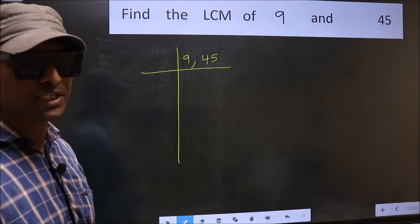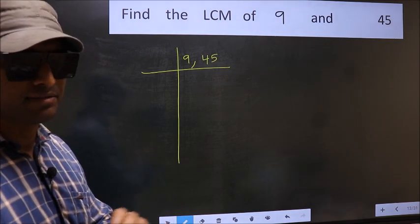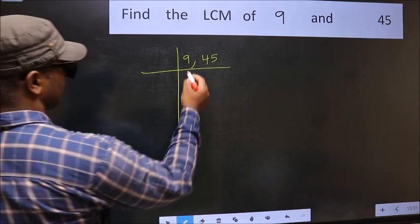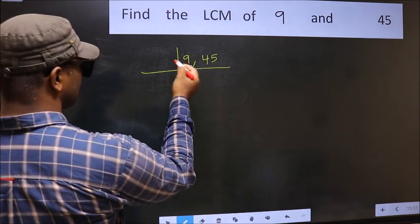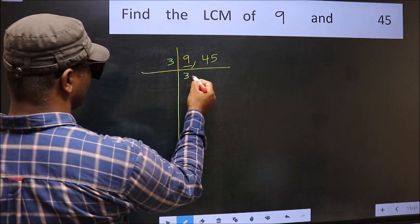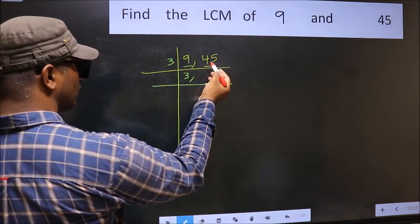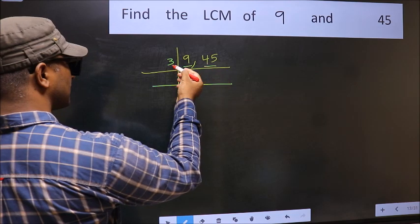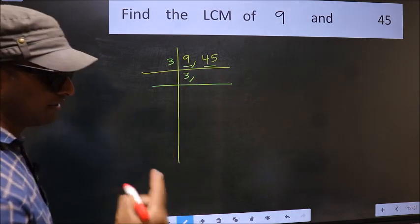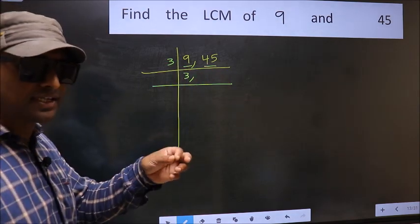Now focus on the first number, which is 9. The other number is 45. To check whether 45 is divisible by 3 or not, add the digits.